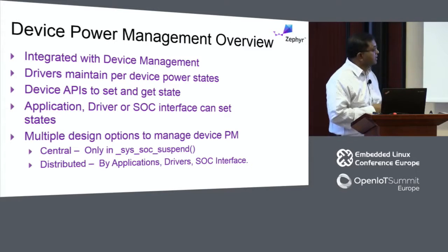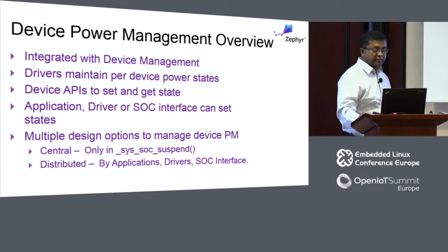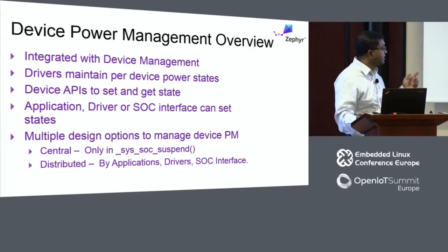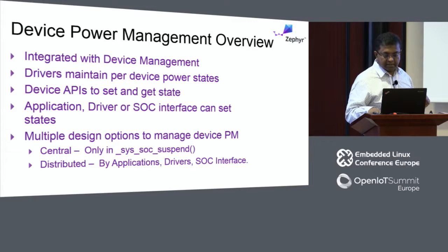The history of device power management: first we only had the central mode, where device PM was done only in sys_soc_suspend. Now we have another mode, which opens up a lot of new possibilities. Every device has a device structure, and all device management interface APIs require it. The first API gets the array of device structures in the system. Set and get state APIs are straightforward. The last ones were added mainly for the central mode but can be used in other modes too — when a device starts a hardware transaction that should not be interrupted by deep sleep, it can set a busy bit. The component trying to go to deep sleep can check this bit for any or all devices before deciding whether to go to deep sleep.